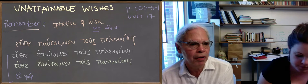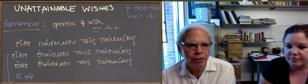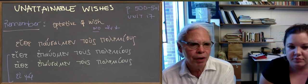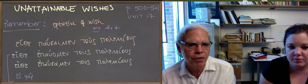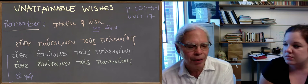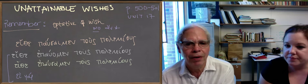This is something similar to the contrafactual conditional syntax. So aether paoamen tus polamilus, I think this is intuitively reasonable, means would that, I wish that we were stopping the enemy. Now already by then, when you said that, it's not possible anymore, right? Because we aren't, is what's implied.